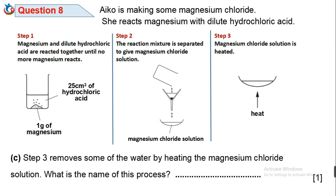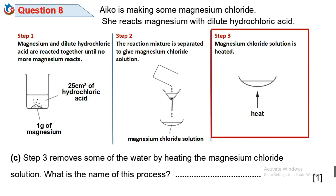Question 8c: Step 3 removes some of the water by heating the magnesium chloride solution. What is the name of this process? The application of heat will cause evaporation or boiling. Therefore, the process in step 3 is called evaporation, though boiling is also acceptable.